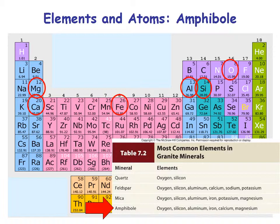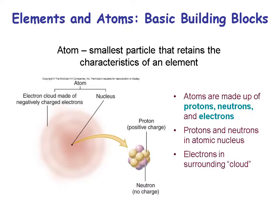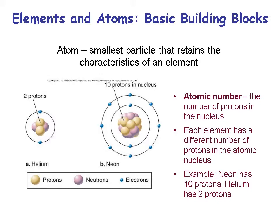An atom is the smallest particle that retains the characteristics of an element. An atom is made up of protons and neutrons in the nucleus, and an electron cloud that surrounds it. Here are two examples: a helium atom and a neon atom — both are in balance. Helium has two protons and two electrons, balancing the positive and negative charges, and the same with neon.